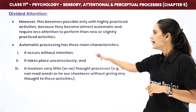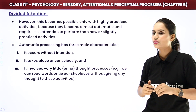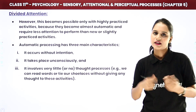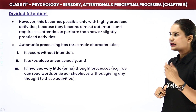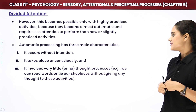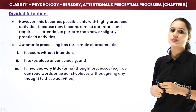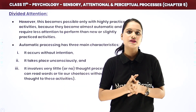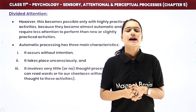There are three characteristics of automatic processing. First, there is no intention — if you are driving a car and talking, you don't have a deliberate intention for it; it just happens as part of your day-to-day activities. Second, it is unconscious — you are not aware of these processes, they just happen normally in daily life. For example, you can tie your shoelace, read some words, or talk to others automatically. That comes under your divided attention.